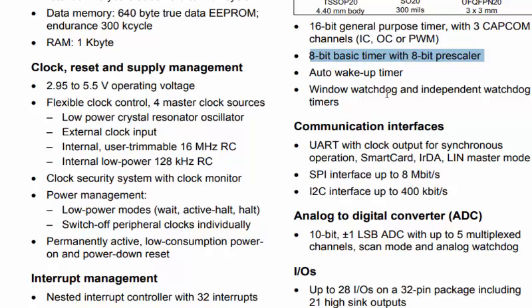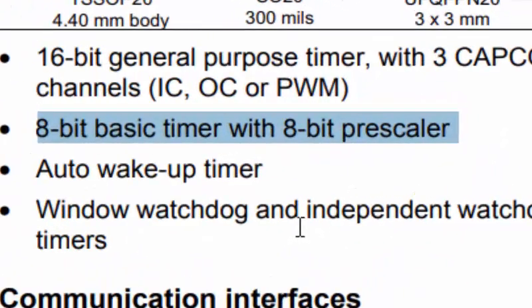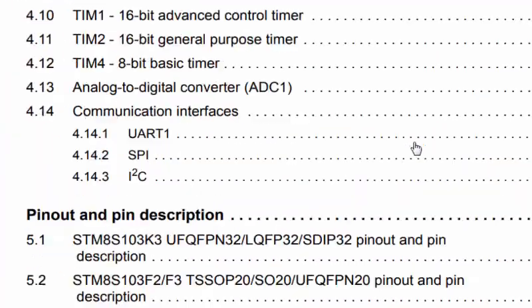If you are coming from an Arduino background, you may be familiar with the delay() and delayMicroseconds() functions, which use the inbuilt Timer 0 to create accurate delays. We are going to replicate those two functions in our STM8 Cosmic C compiler. I will be creating the application in C language and will cover assembly language in the next video, so please subscribe.